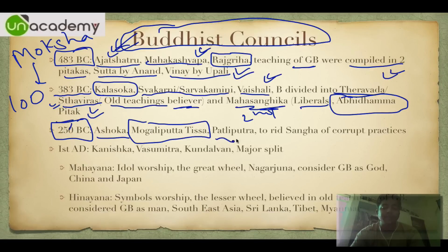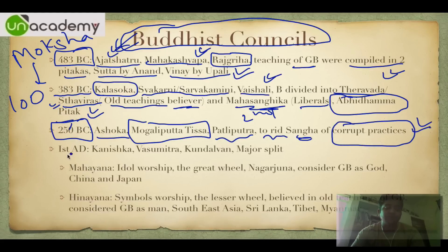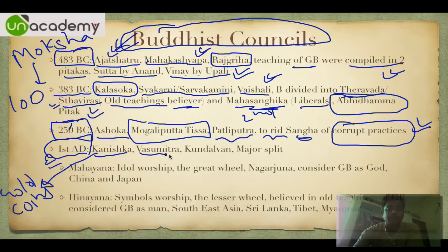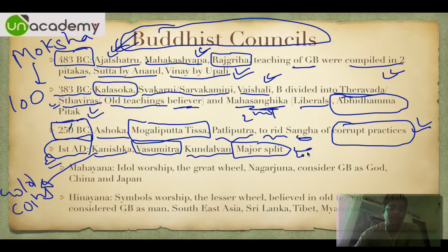Third council: 250 BC during the reign of Ashoka the Great, presided by Moggaliputta Tissa, at Pataliputra (modern Patna). Its agenda was to purge the Sangha of corrupt practices. Fourth council: first century AD, under Kanishka — who introduced gold coins for the first time in India — presided by Vasumitra, held at Kundalvana.